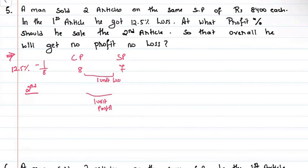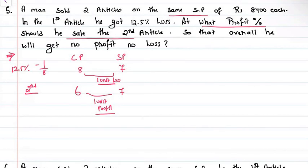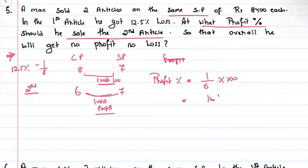On the same selling price, first article has cost price 8, selling price 7 — so loss is 1 unit. For no profit no loss, the second article must give profit of 1 unit. Second article cost price is 6 and selling price is 7. So profit percent is 1 divided by 6 into 100 equals 16 and 2 by 3 percent.